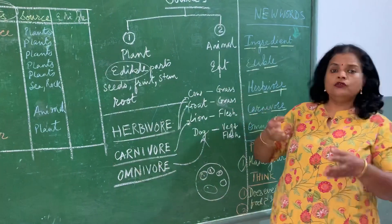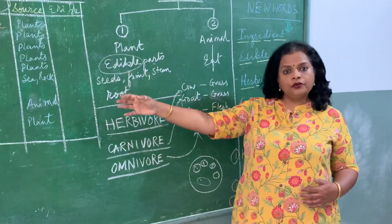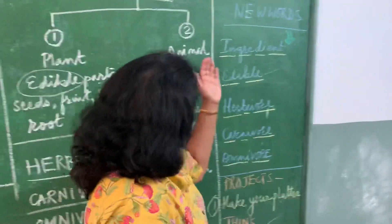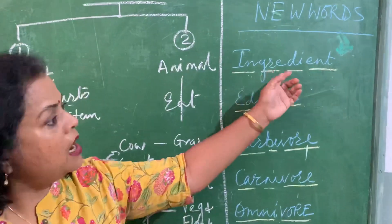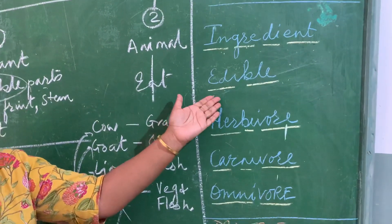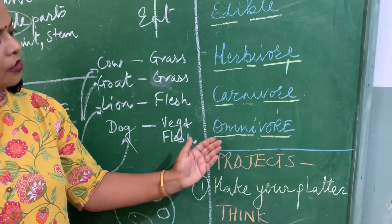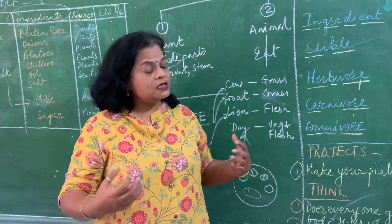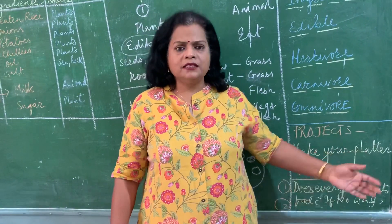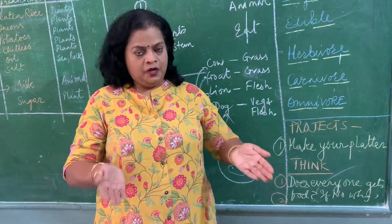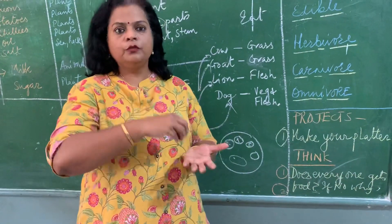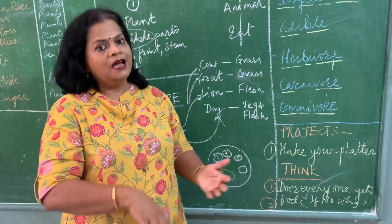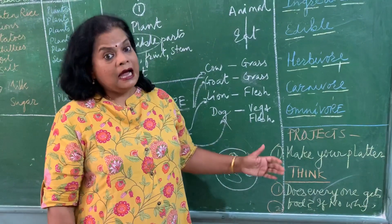Today we have seen the food which we eat, the ingredients in the food which we take, and the sources from where we are getting them. What you learned today: ingredients, edible parts, herbivore, carnivore, and omnivore. I will give a project for all — you make your own thali. Take a thermocol thali and put the things you eat in it. Put the pulses, instead of loose rice put the right amount, and so on. Write down the sources and the edible parts if you can.